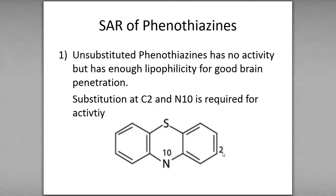The Phenothiazin ring is required for activity. If there is no Phenothiazin ring, the drug will not reach the brain and activity will not be shown. Therefore, the Phenothiazin ring is indirectly involved in the exhibition of activity. Substitution occurs at two places: C2 and N10.